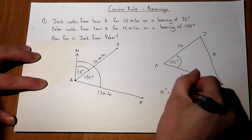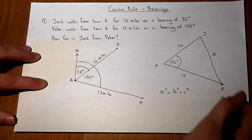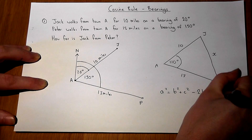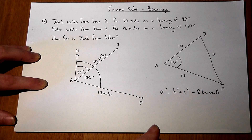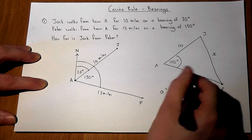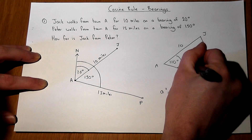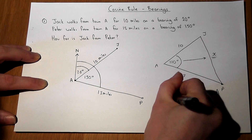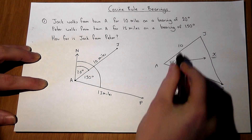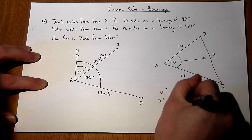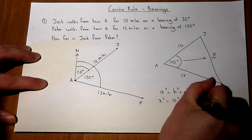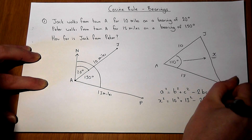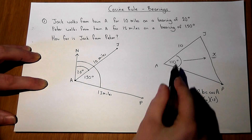The cosine rule is: a² = b² + c² − 2bc·cos(A). We want to find X, which is opposite the angle, so X replaces a in this formula. B and C are the other two sides, giving us: X² = 10² + 30² − 2 × 10 × 30 × cos(110°).